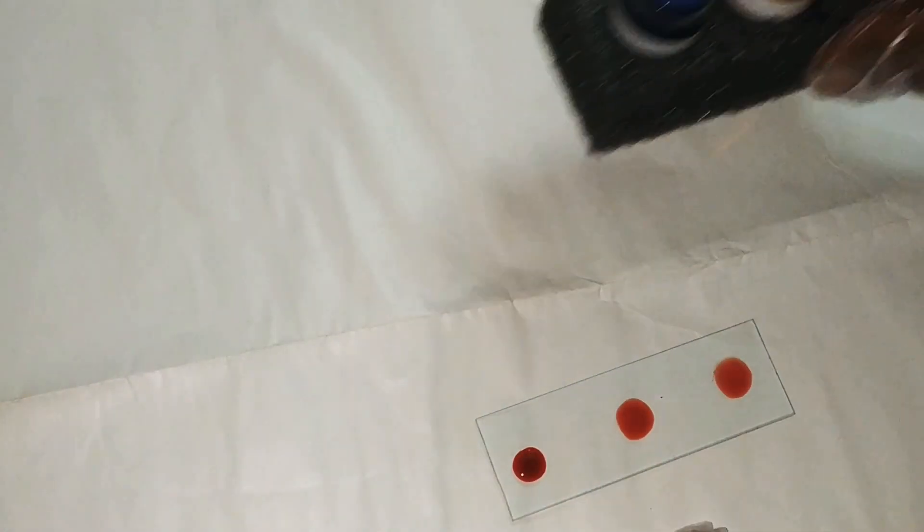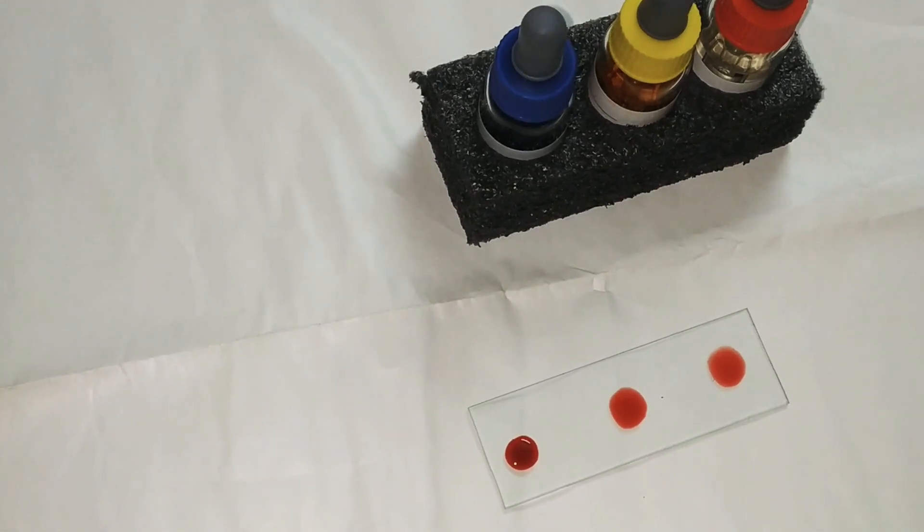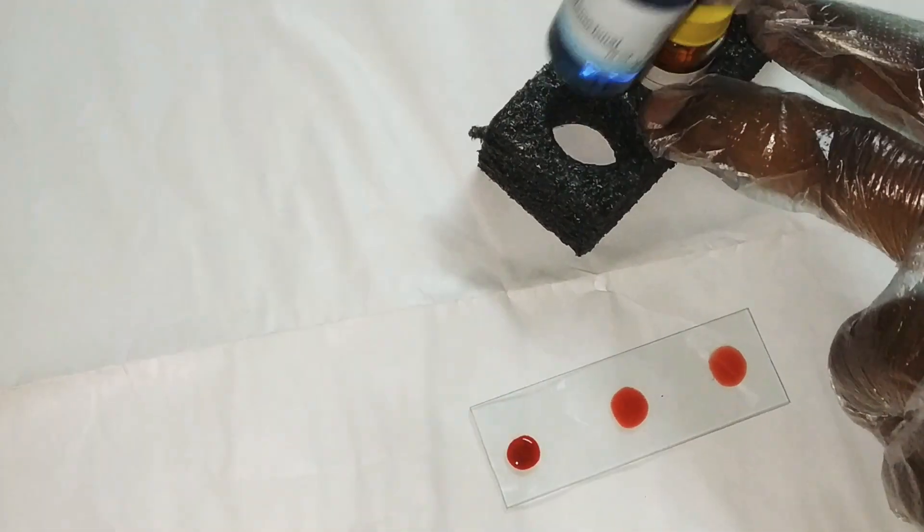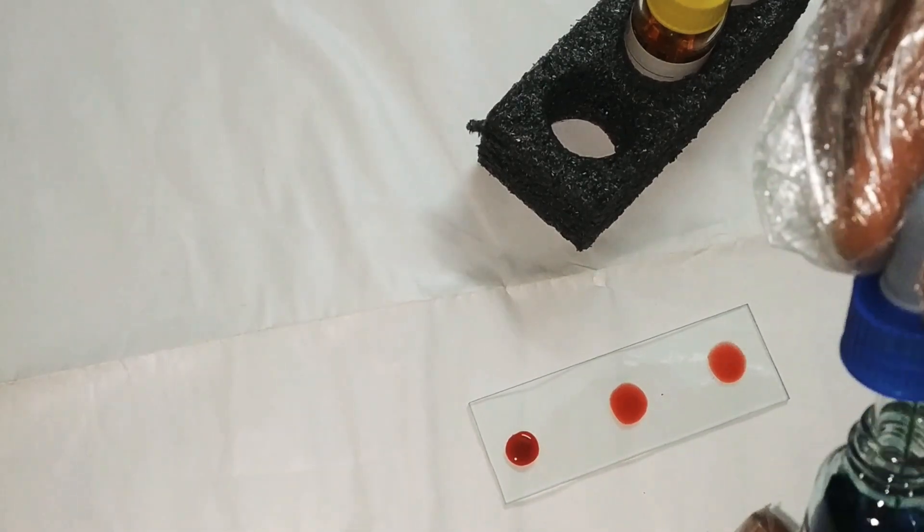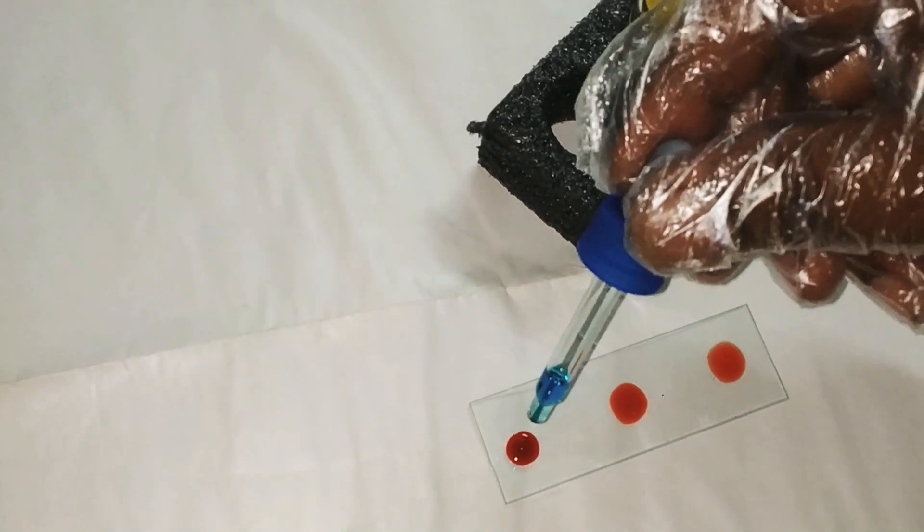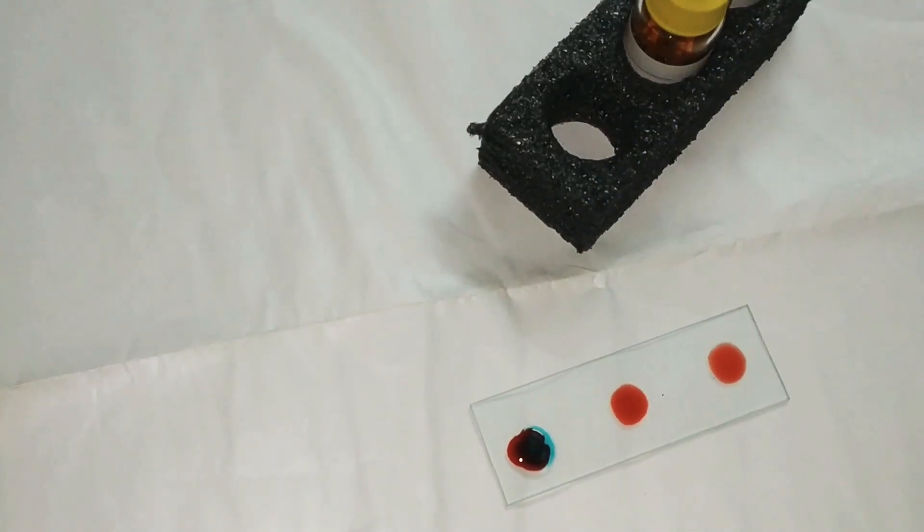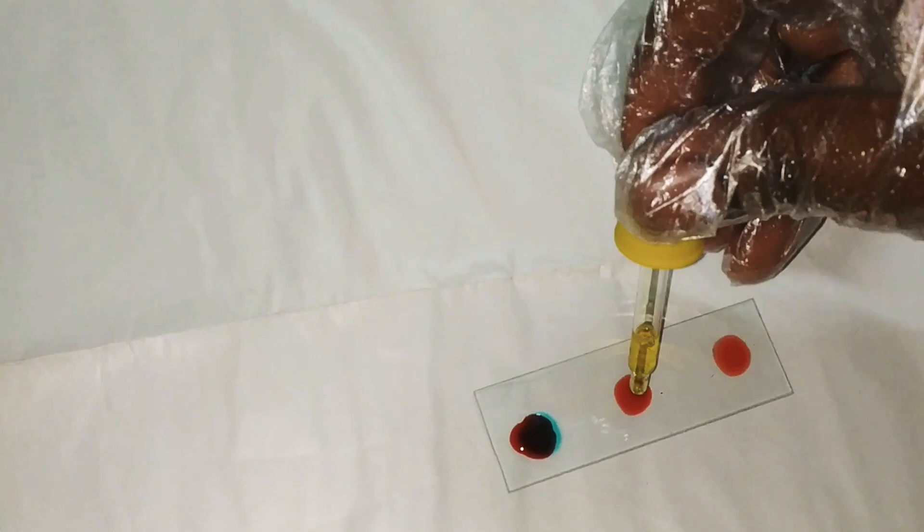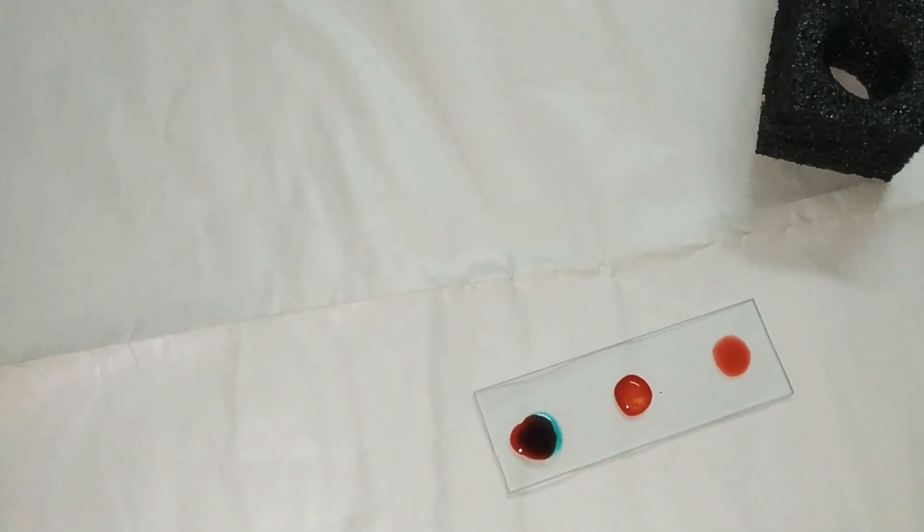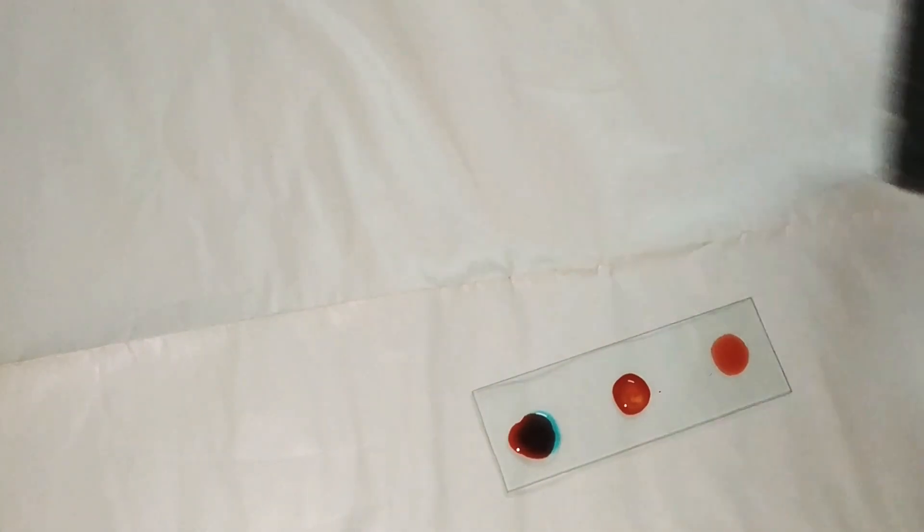So now we have collected the three drops of blood and here is our anti-serum which is at room temperature. Now let's take the anti-serum A. I'm taking anti-serum A, see here this is anti-serum A. We are putting it in the first drop. In the second, we are taking anti-serum B and I'm putting this in the center, one drop.